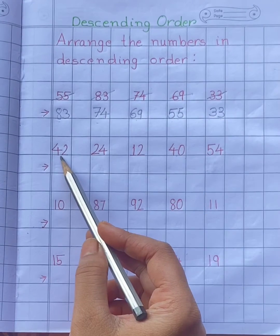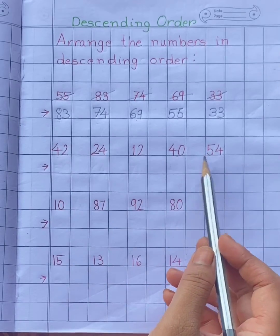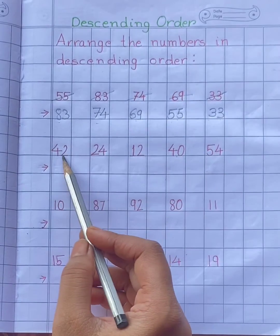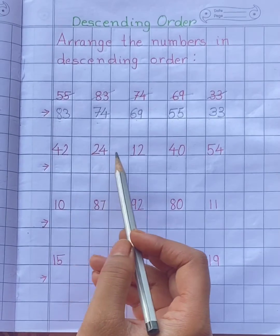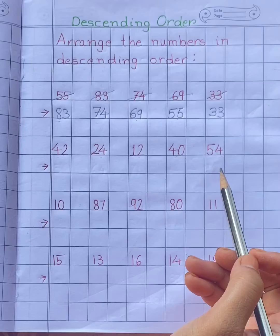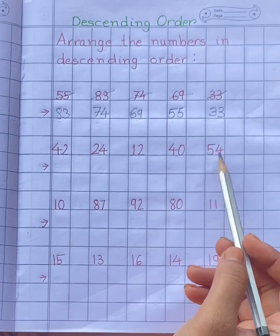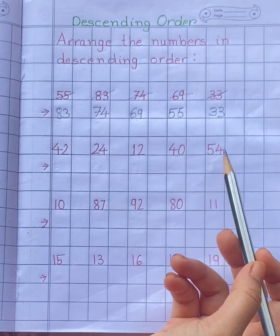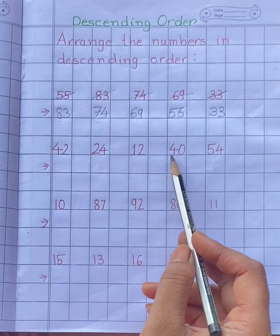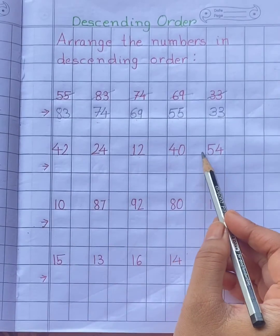Now let's arrange another group of numbers. Look at these numbers: 42, 24, 12, 40, 54. We have to arrange these numbers from biggest to smallest. Tell me, children, which number is biggest here? Yes, 54.